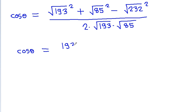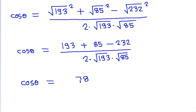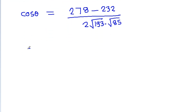Simplifying the numerator: (√193)² + (√85)² − (√232)² = 193 + 85 − 232. That gives 193 + 85 = 278, minus 232 = 46. So the numerator becomes 46, and cos theta = 46 divided by 2·√193·√85.